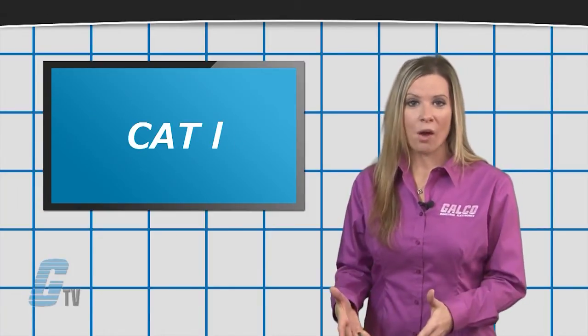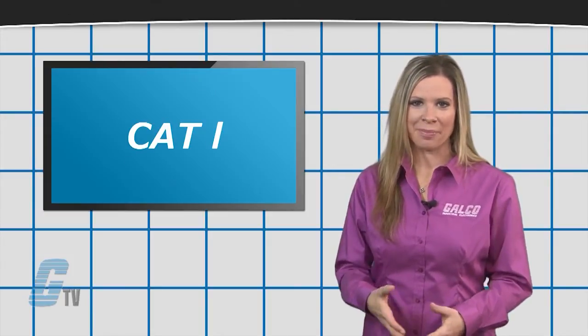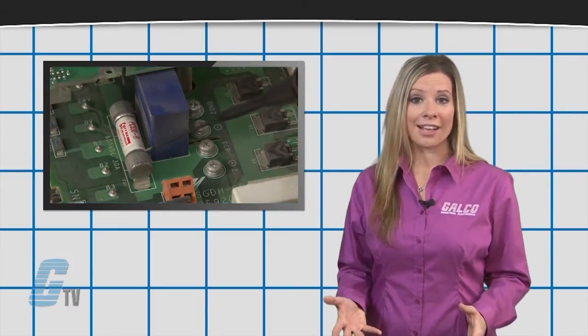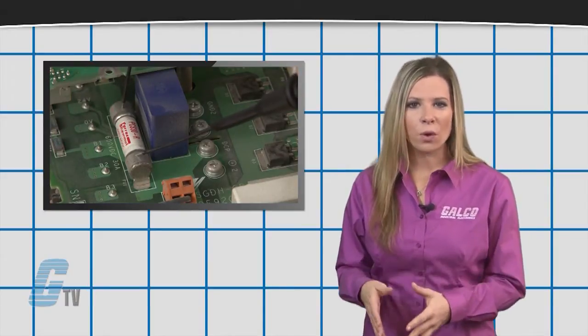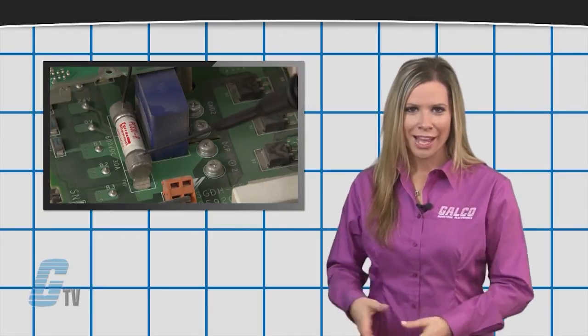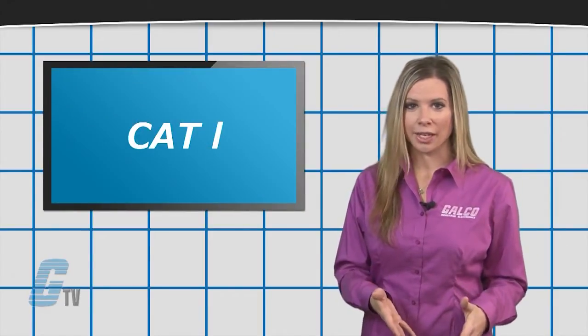Category 1 or Cat 1 is used with equipment not connected to a main line. The voltage can still be as high as 600 or 1000 volts depending on the multimeter, but the voltage peak should be lower. These multimeters can also be used with protected electronic equipment.